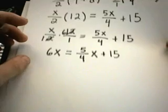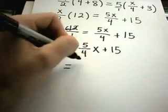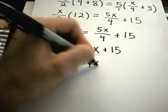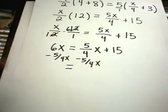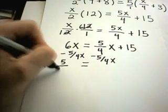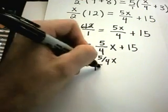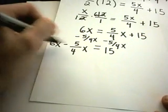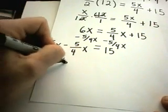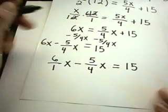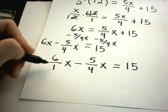I could write this as 5 fourths x plus 15. Now I'm going to use this basic idea of getting the x's on the same side. I'm going to subtract 5 over 4x from both sides. I'll get 6x minus 5 over 4x equals 15 on the right side. Now I've got fractions floating around. I can write 6 as 6 over 1x minus 5 over 4x equals 15. Here I have to get common denominators.